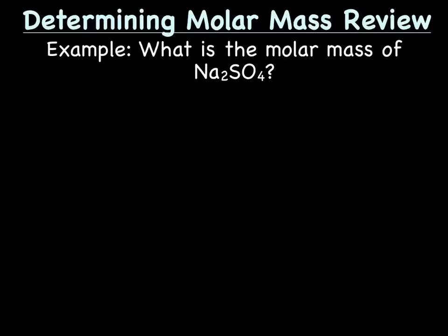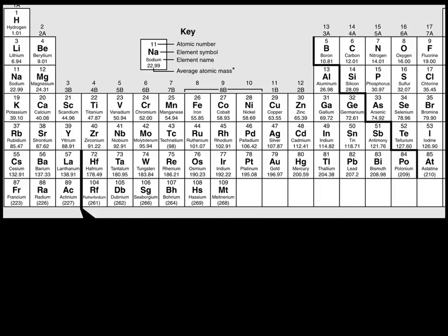Let's start with a quick review on how to determine molar mass. Molar mass is the mass of a mole, or 6.022 × 10²³ atoms or molecules, with the units grams. For example, what is the molar mass of sodium sulfate, or Na₂SO₄? We need to figure out what type and how many of each atom are in the molecule: two sodiums, one sulfur, and four oxygens. Now we look up the mass of each atom on the periodic table. Remember, when looking at the periodic table to find molar mass, the unit is grams.